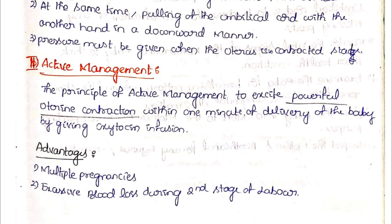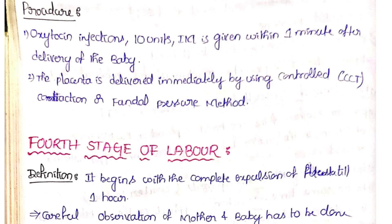Next, active management. The principle of active management is to excite powerful uterine contractions within one minute of delivery of the baby by giving an oxytocin injection — 10 units IM — within one minute after delivery of the baby. The advantage is for patients with multiple pregnancies or those who have excessive blood loss during the second stage of labor. The placenta is then delivered immediately using controlled cord traction or fundal pressure.